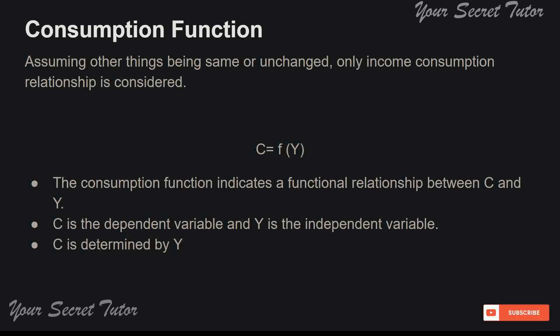So in the function C = f(Y), consumption is the dependent variable and income is the independent variable. Consumption is on the left-hand side as the dependent variable, and income is on the right-hand side as the independent variable. Income determines consumption — when income changes, consumption changes.